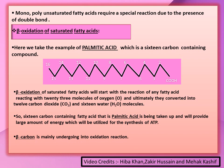Monounsaturated and polyunsaturated fatty acids require certain special reactions due to the presence of double bonds. Beta oxidation of saturated fatty acid is the first topic I am going to start. I will take the example of palmitic acid, which contains 16 carbons. Beta oxidation of saturated fatty acid starts with palmitic acid reacting with 23 molecules of oxygen, ultimately giving rise to 12 carbon dioxide and 16 water molecules.